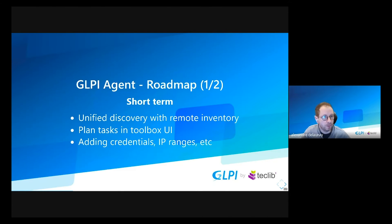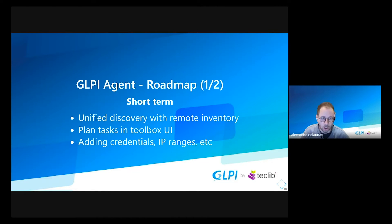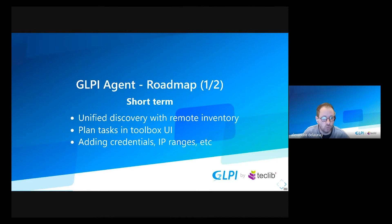We use SSH and WinRM protocol to achieve that. The first point we want to improve is to ease the inventory process of your network. We currently have two tasks: Discovery, which pings addresses in an IP range, and Network Inventory, which takes the result of the discovery to do a full SNMP inventory for network equipment and printers. We'll change the process by adding the remote inventory task of computers and let the Discovery task directly do a full inventory. If it knows the type of the remote device — SNMP query for network equipment, SSH or WinRM queries for computers — with one unified task and one setup, we aim to let you discover all your network devices.